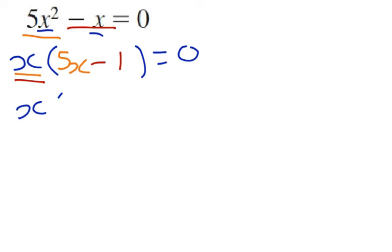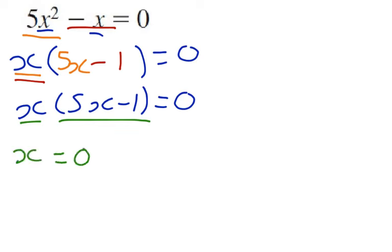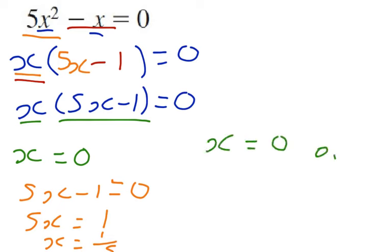So now we have x, 5x minus 1 in brackets equals 0. As with the other ones, one of either x or 5x minus 1 must be 0. So either x equals 0, which is our first part. Or 5x minus 1 equals 0, which tells us 5x equals 1 or x equals 1 fifth. So our final answer is x equals 0 or x equals 1 fifth.